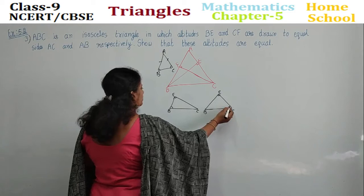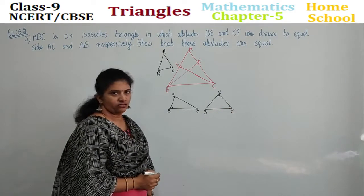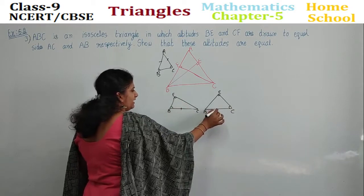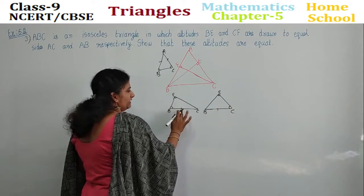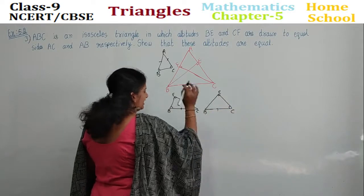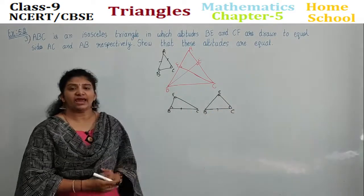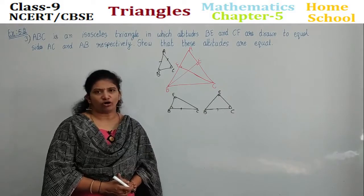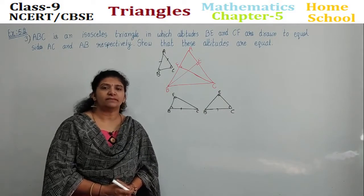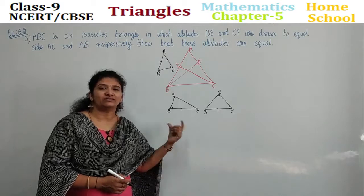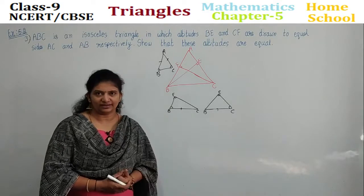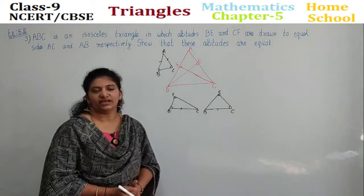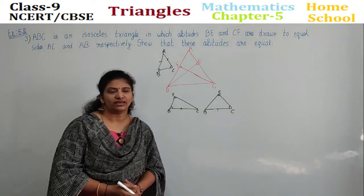Angle B is equal to angle C. Angle, angle, side — by AAS rule I can say these two triangles are congruent. If they are congruent, by CPCT I can equate other sides or other angles. Therefore CF is equal to BE. Therefore the altitudes are equal.